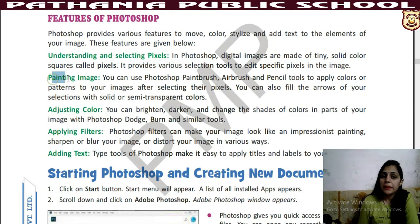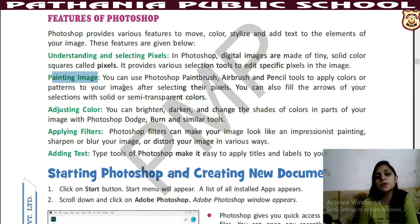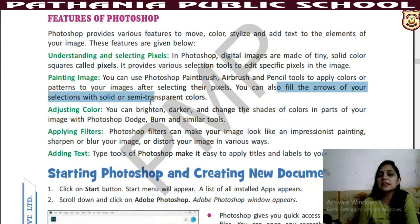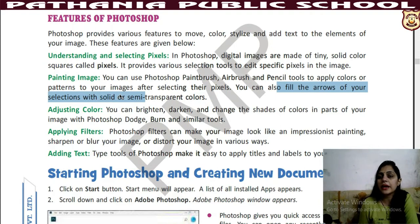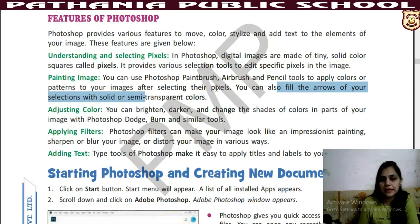The second feature is painting image. You can use Photoshop's paintbrush, airbrush, and pencil tools to apply colors or patterns to your images after selecting their pixels. Just like we use MS Paint — paintbrush, airbrush, pencil tools — in the same way, here also we can use all these tools. You can also fill the areas of your selections with solid or semi-transparent colors. Semi-transparent means, like placing your screen on the book — you can see the colors through it and the text is also clear — it is transparent, so after writing you can still read that thing.